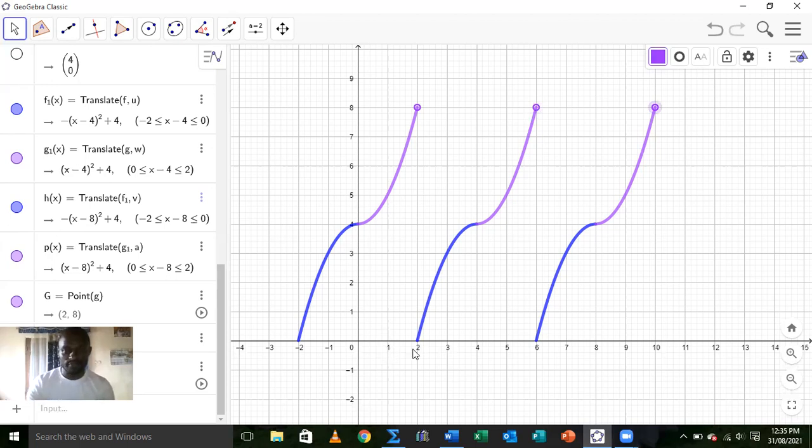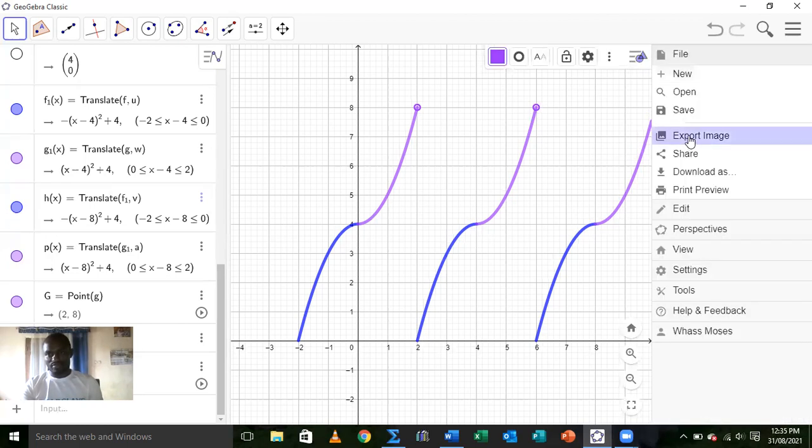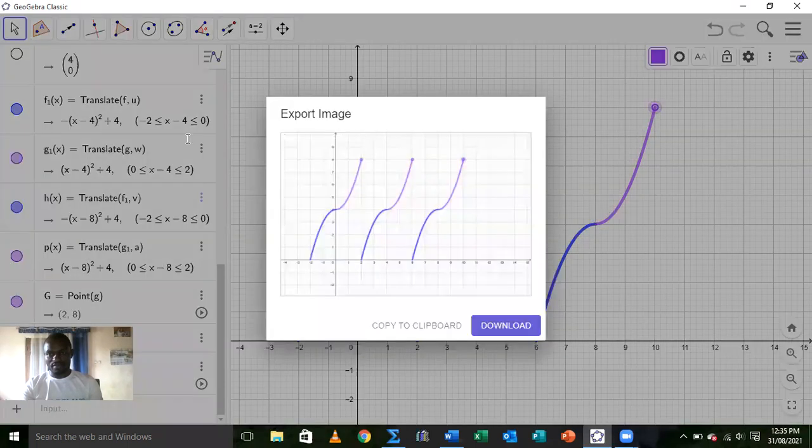Great! What we have now is the sketch of the periodic function that was given. The next thing we will do is export this to a Word document. How do we do that? We click on the main menu and choose export image.